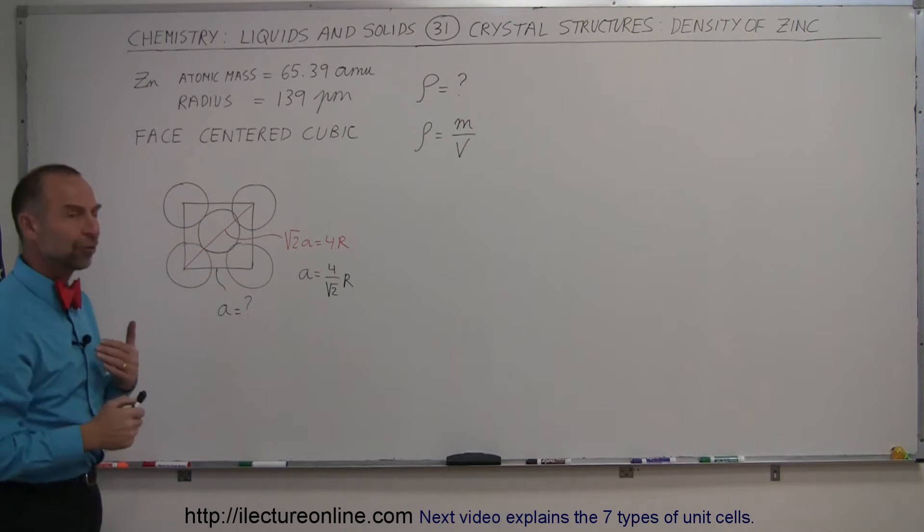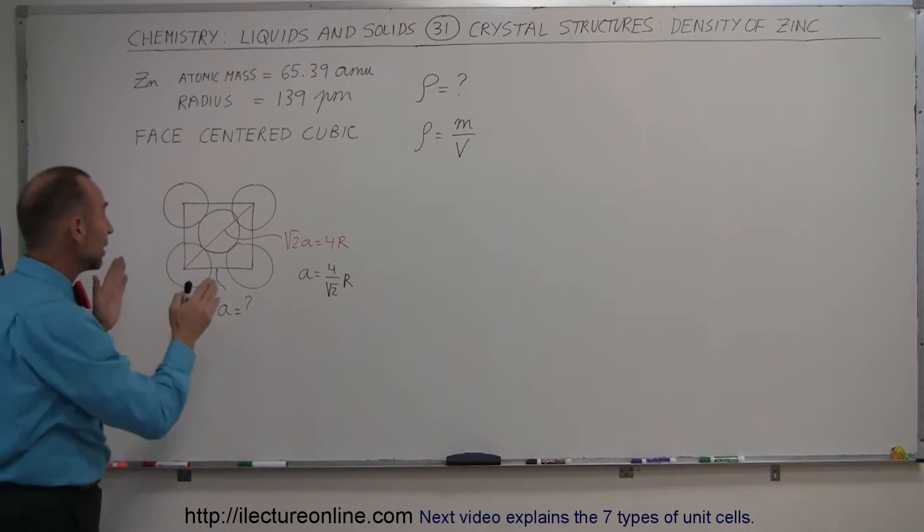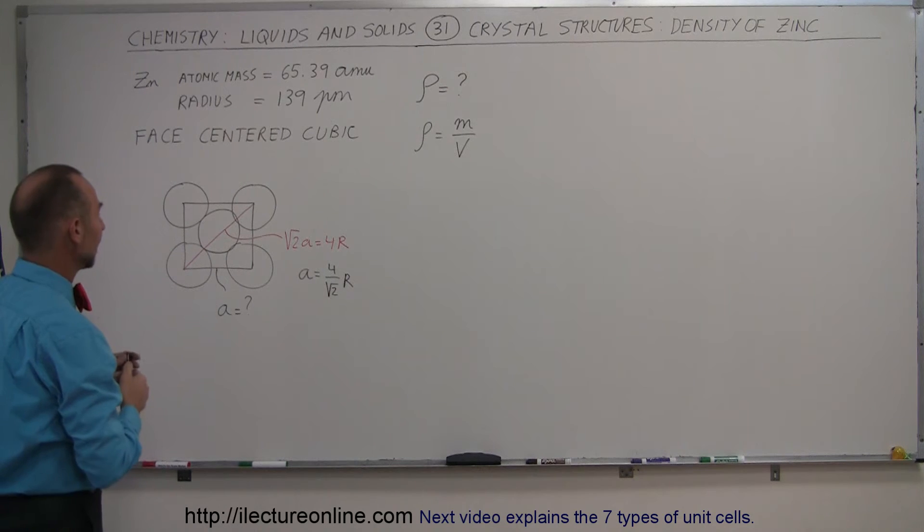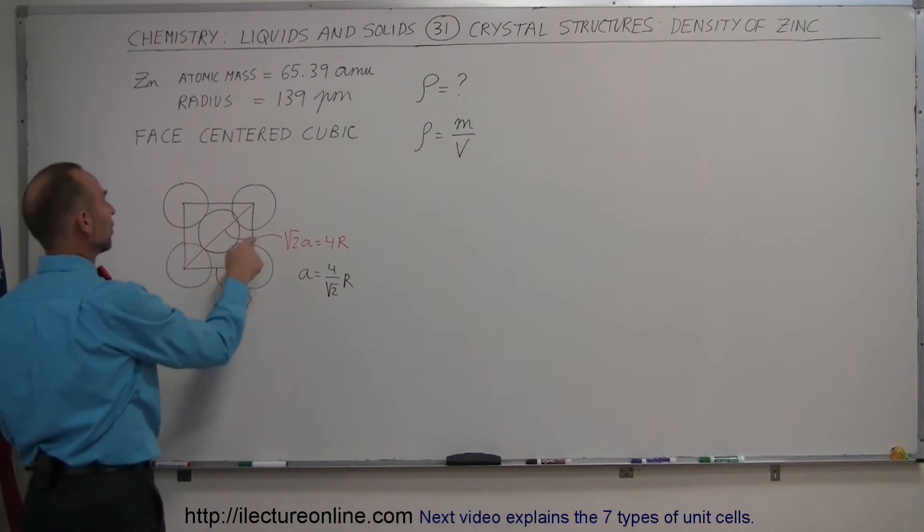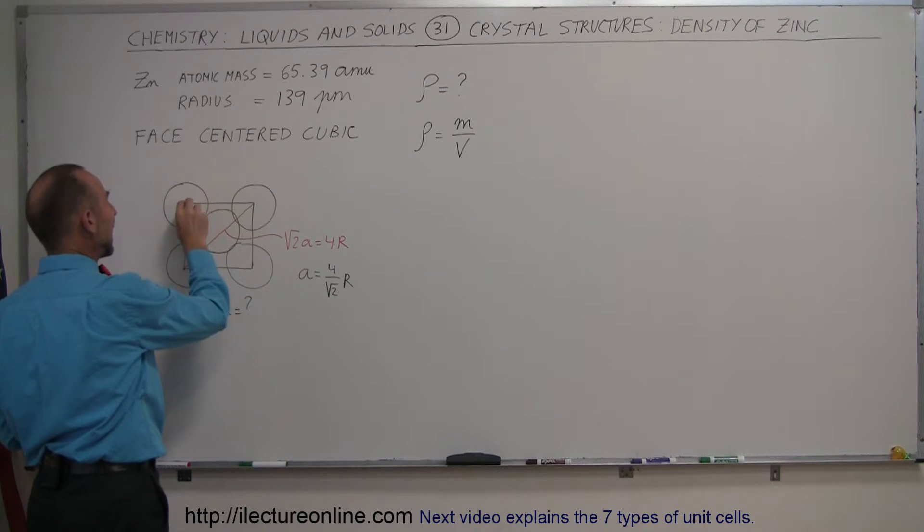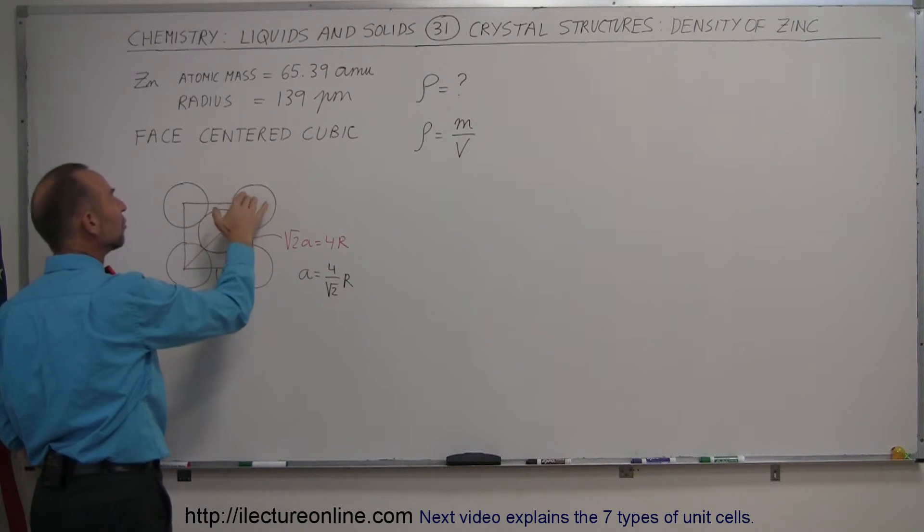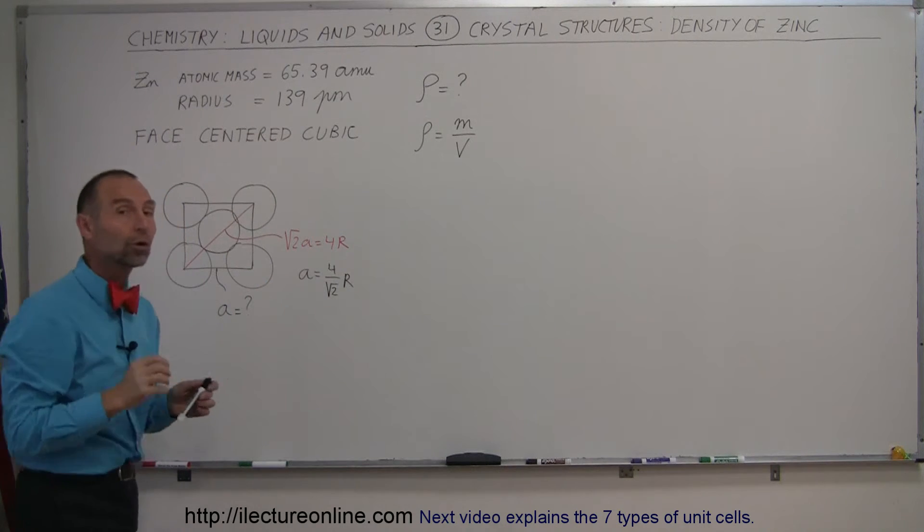Because of that, we need to first figure out how many atoms are contained within a unit cell in a structure like that. For the corners, we know that one-eighth of each atom is associated with the cube. The other seven-eighths is associated with the other seven cubes that would be centered around that corner of that cube.